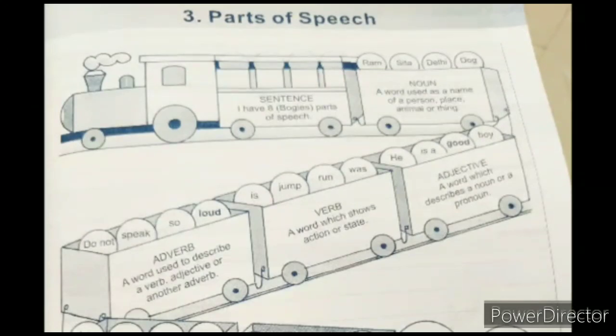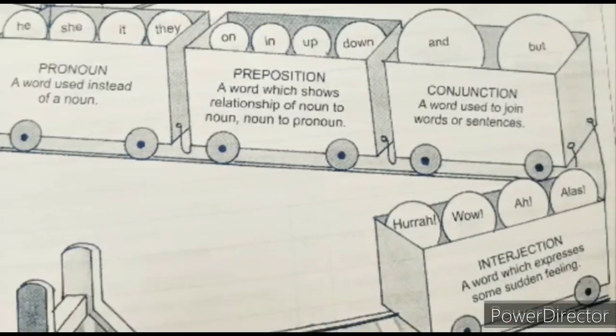Now, come to the next bogey. That is preposition. It says preposition. Break the word. Pre-position. So a word which shows relationship of noun to noun or noun to pronoun is called preposition. Or in another way, we can say that a word which tells us the position of noun to noun or noun to pronoun is called preposition.